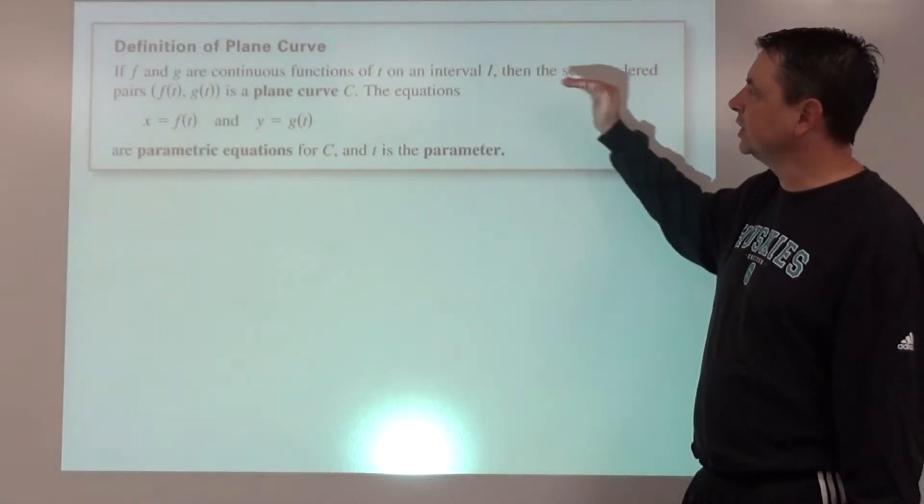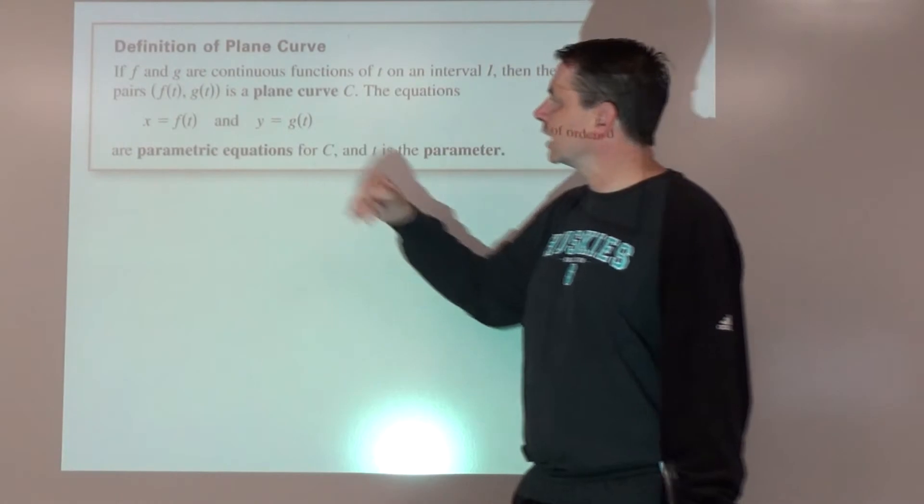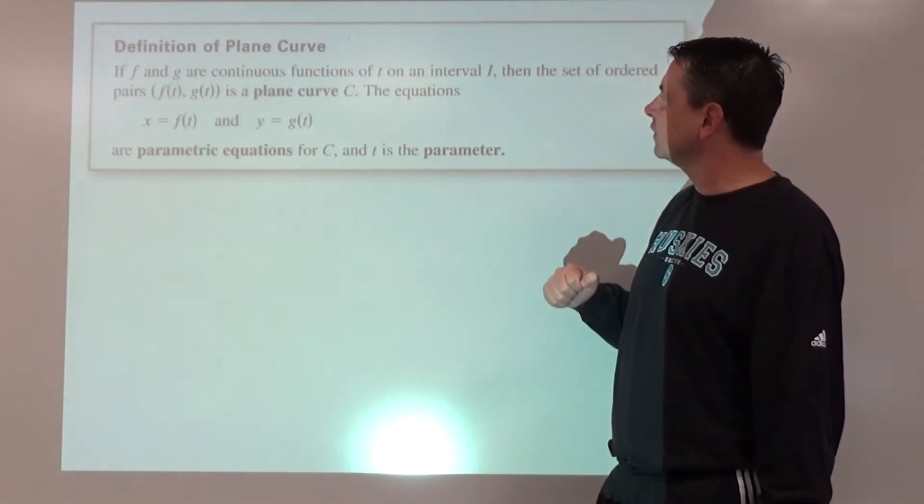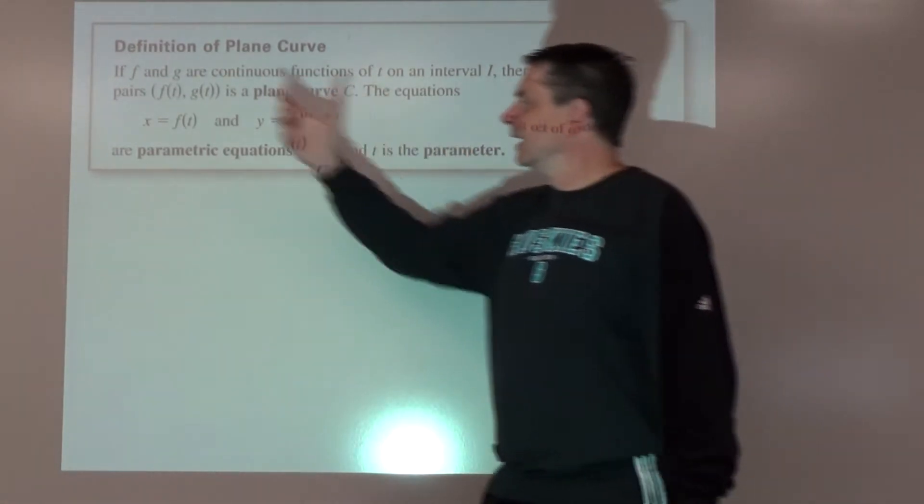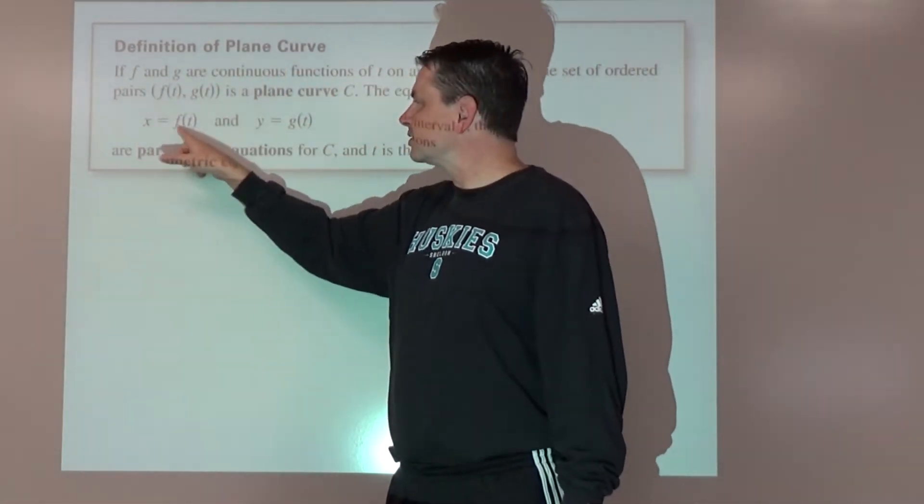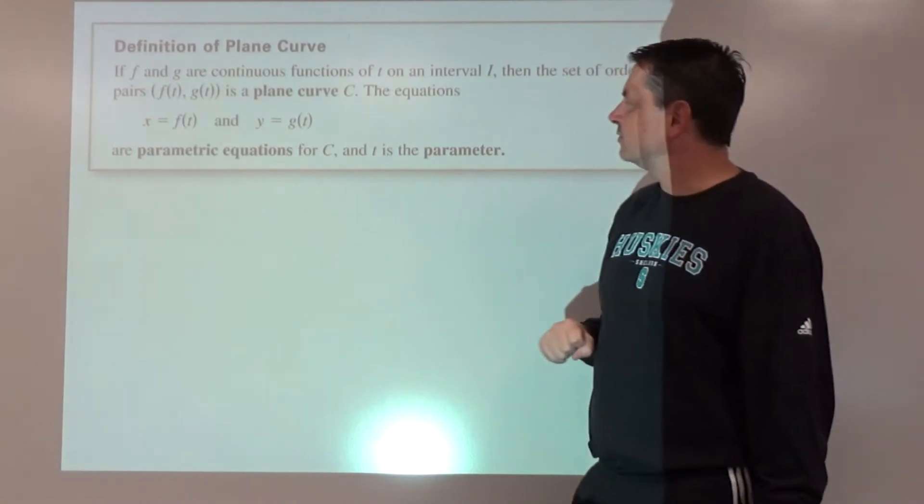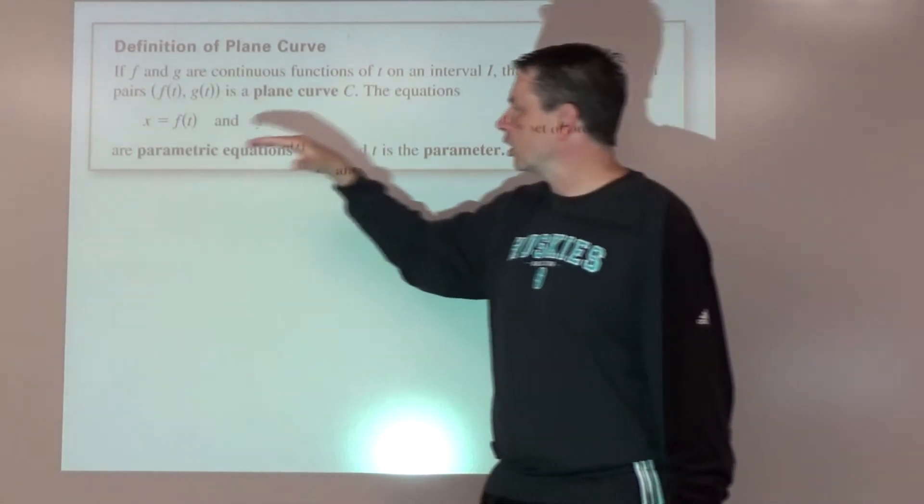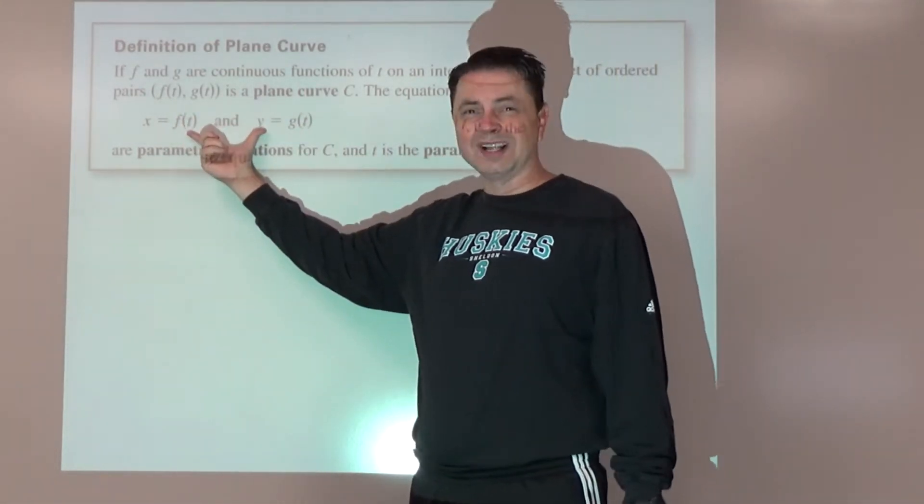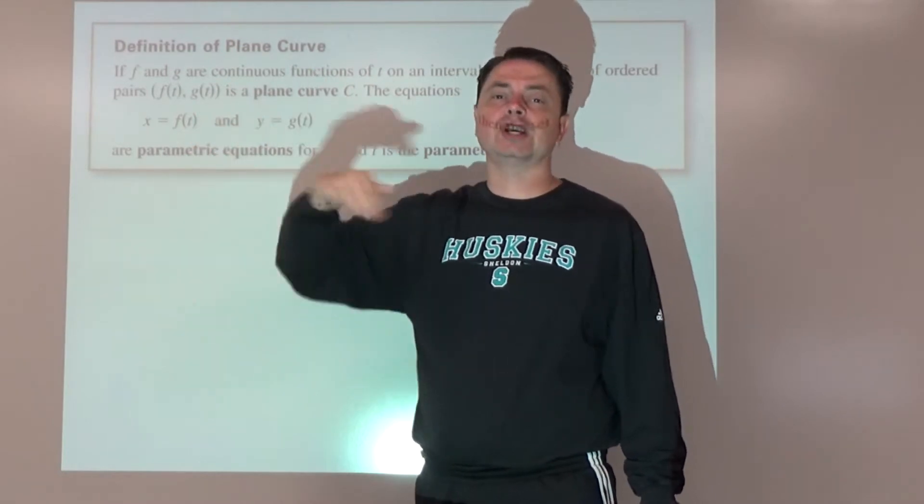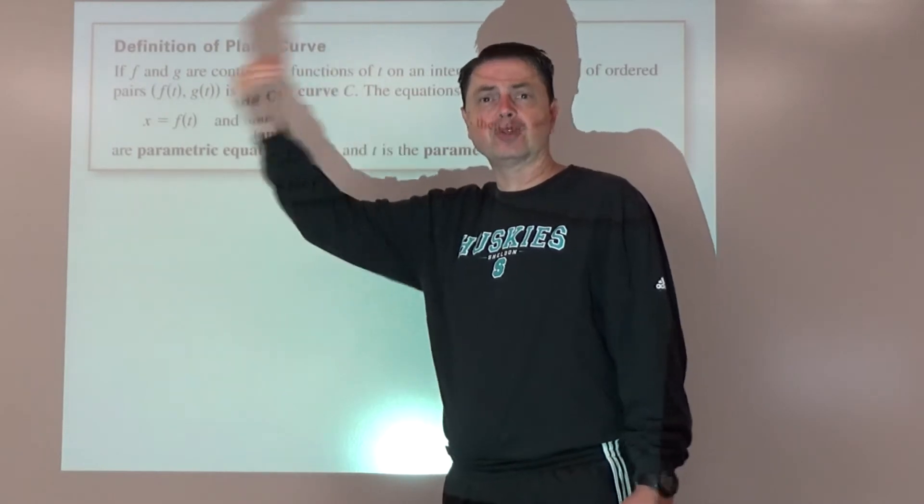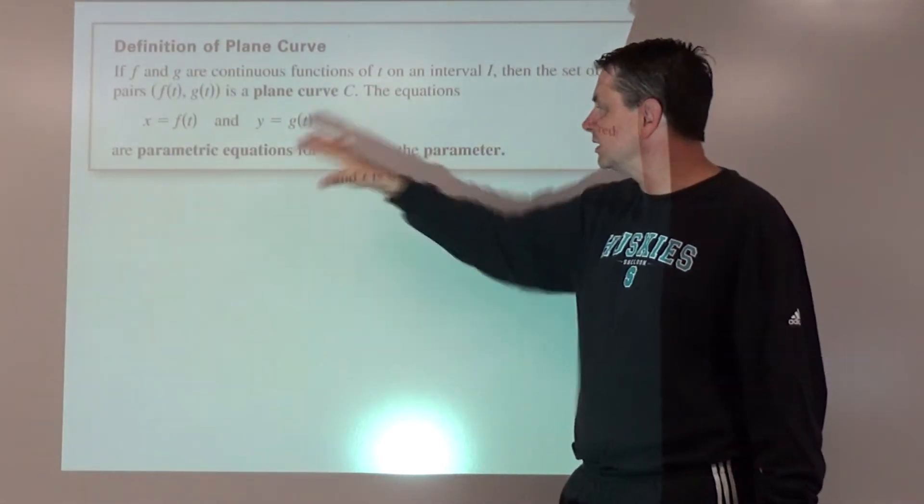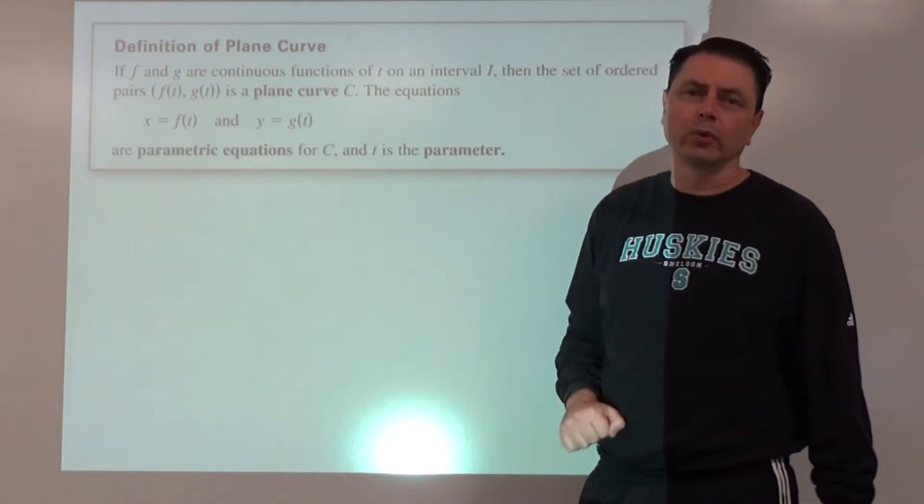So definition: we've got f and g as continuous functions on an interval i. Then the x-coordinate is defined as a function of t, y-coordinate is defined as a function of t. These are parametric equations, so it's one set of parametric equations. t, that third variable that they're both going to be defined in terms of, we call that the parameter.